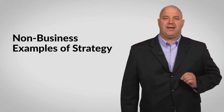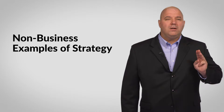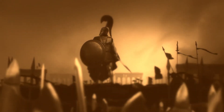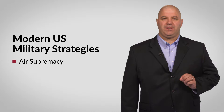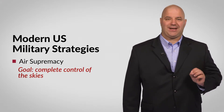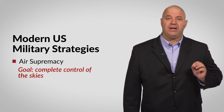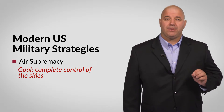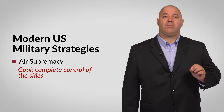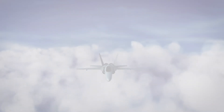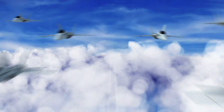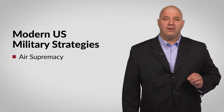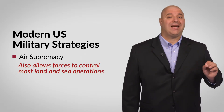Let's talk about some non-business examples of strategy. Although there are a number of contexts where strategies are used, two of the most common come from the military and sports. Military strategies have existed for thousands of years, but let's discuss a few recent ones used by the United States. First, air supremacy — this strategy is focused on complete control of the skies, where an opposition force is incapable of effectively interfering with air warfare operations. Opposition fighters and anti-aircraft weapons are eliminated or reduced to the point of being ineffective.